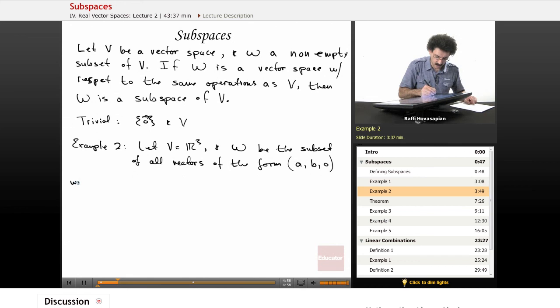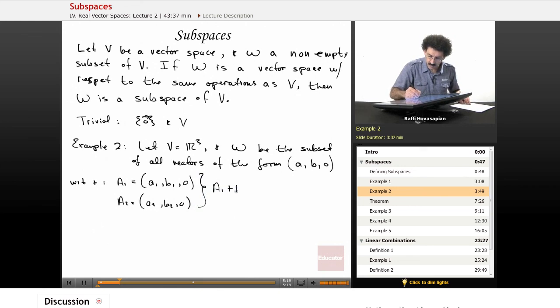With respect to the addition, well let's see. We'll let a₁ equal (a₁, b₁, 0), we'll let a₂ equal (a₂, b₂, 0). a₁ plus a₂ equals (a₁ + a₂, b₁ + b₂, 0). Well yes, that's a number, that's a number, that's a number. This is a three-vector, it does belong to W.